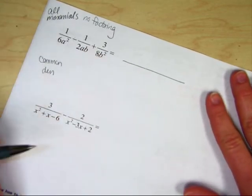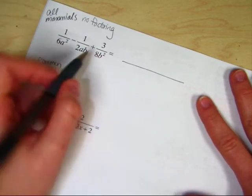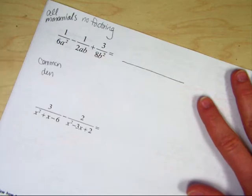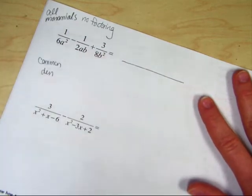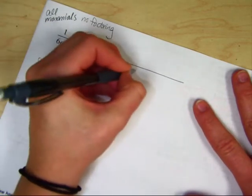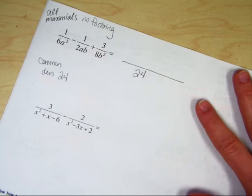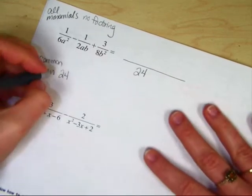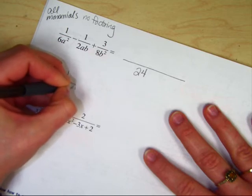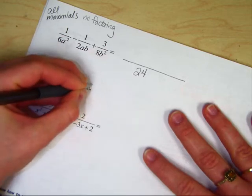8, right? Well let's think of multiples of 8. 8, no. 6 doesn't go into 8. Move on. 16, no. 6 doesn't go into 16. 24, yes. Your common denominator is 24 for the coefficient because 6, 6, 2, and 8 go into 24, okay?